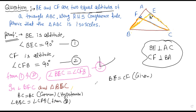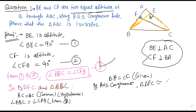So we can write: by RHS — right angle, hypotenuse, side congruence — triangle BFC is congruent to triangle BEC.